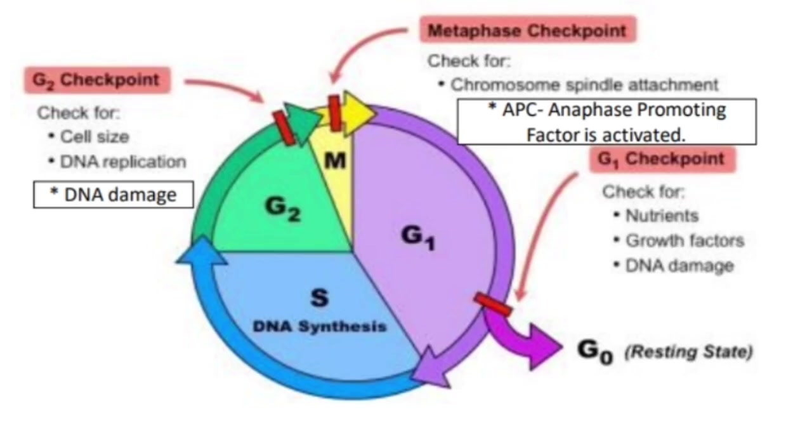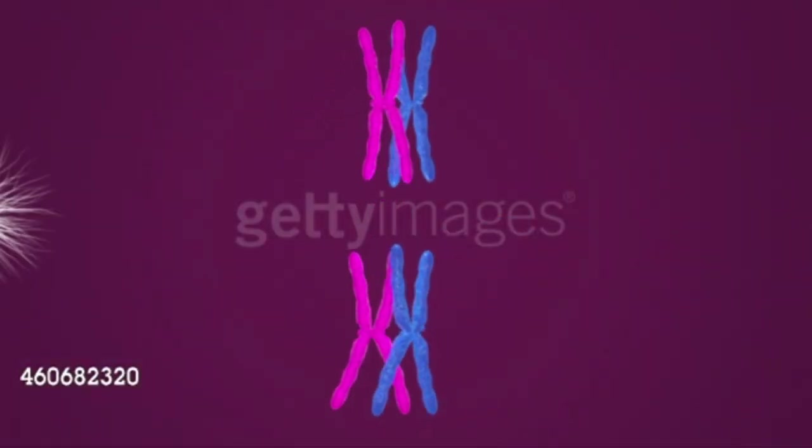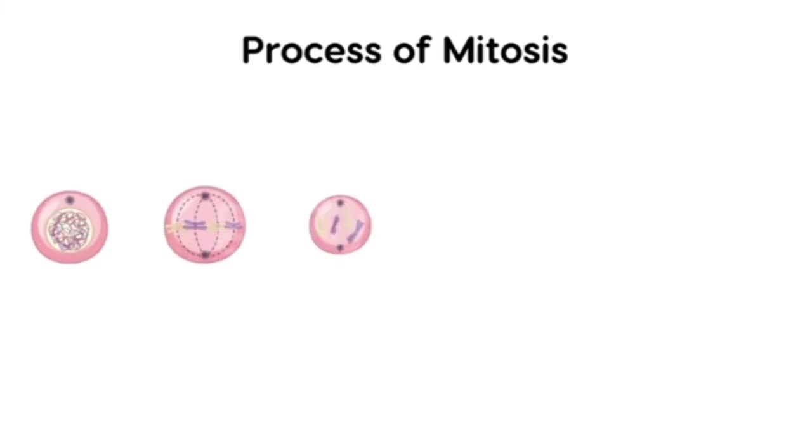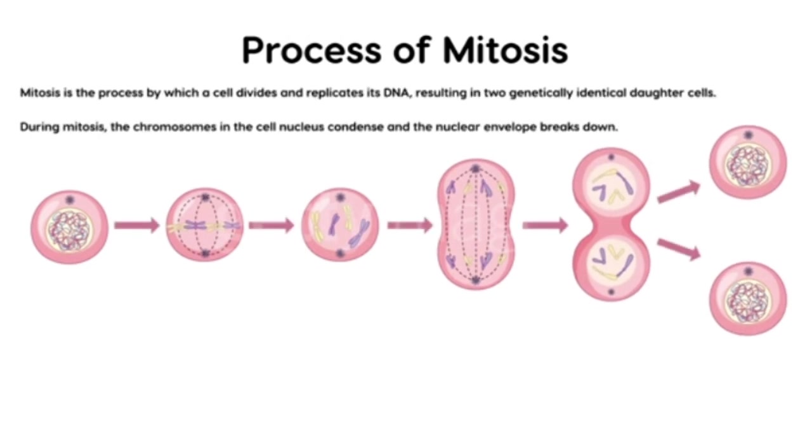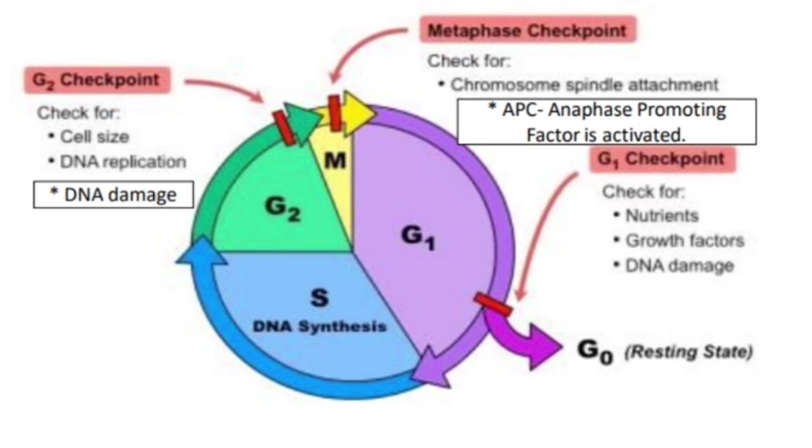Checkpoints. In the cell cycle, the proper changes are triggered by cyclins and CDKs. Two main checkpoints exist in interphase and one in M phase: 1. G1-S Checkpoint. 2. G2-M Checkpoint. 3. Metaphase-Anaphase Checkpoint.